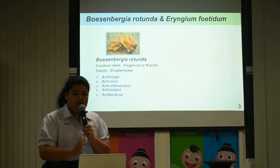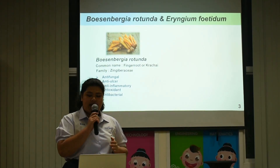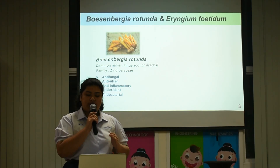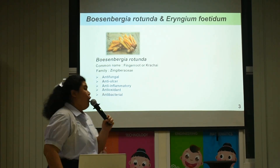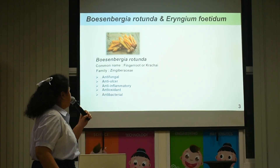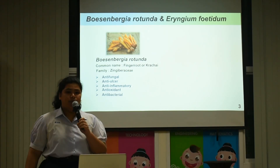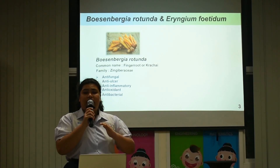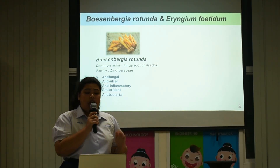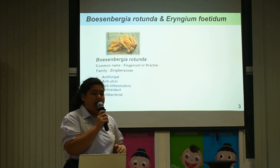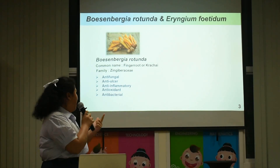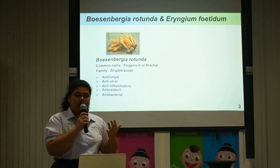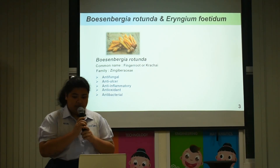Many studies have reported that some plants have antibacterial activity against pathogenic bacteria. Boesenbergia Rotunda has the common name finger root, or in Thai language, Krachai. Finger root can be used as antifungal, anti-ulcer, anti-inflammatory, anti-oxidant, and antibacterial.